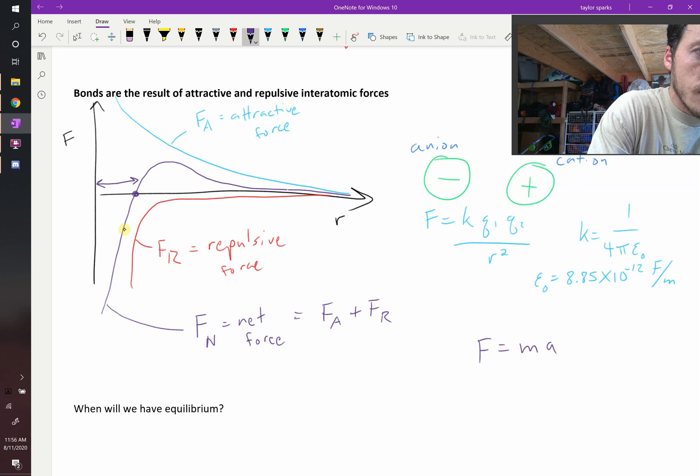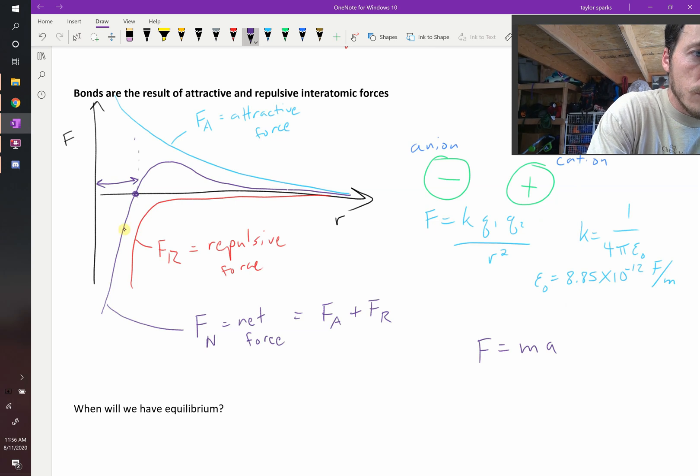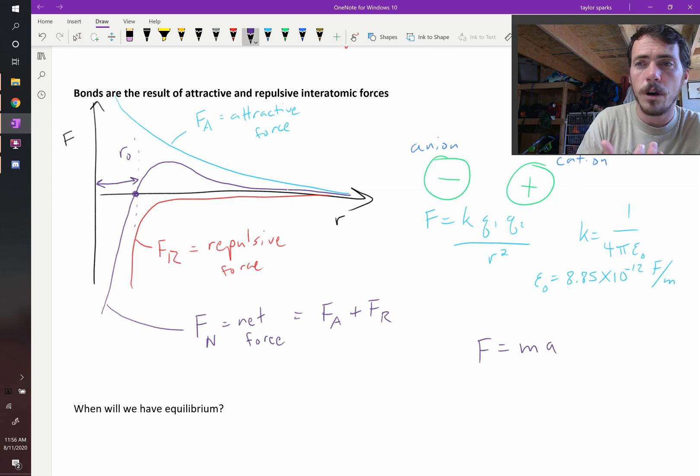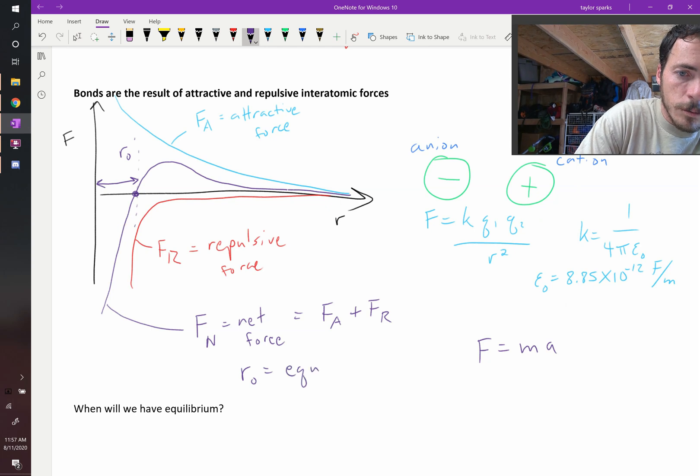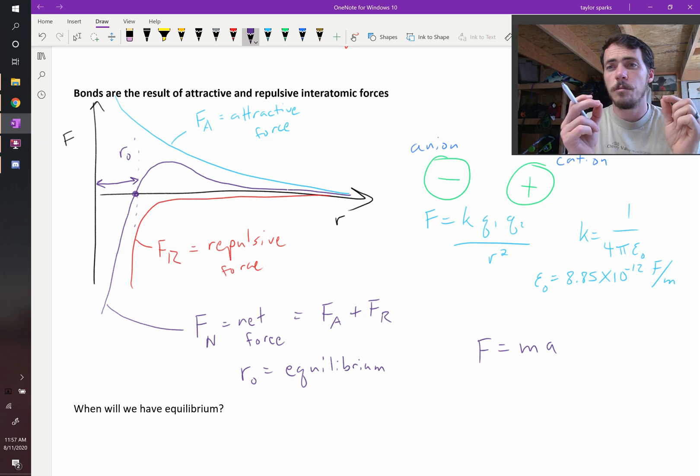That distance—or sometimes we just draw this line right there—that is equal to r naught, and that is our equilibrium bond distance. Okay, so r naught equals our equilibrium bond distance. So that's the bond length between these two things, equilibrium bond length.